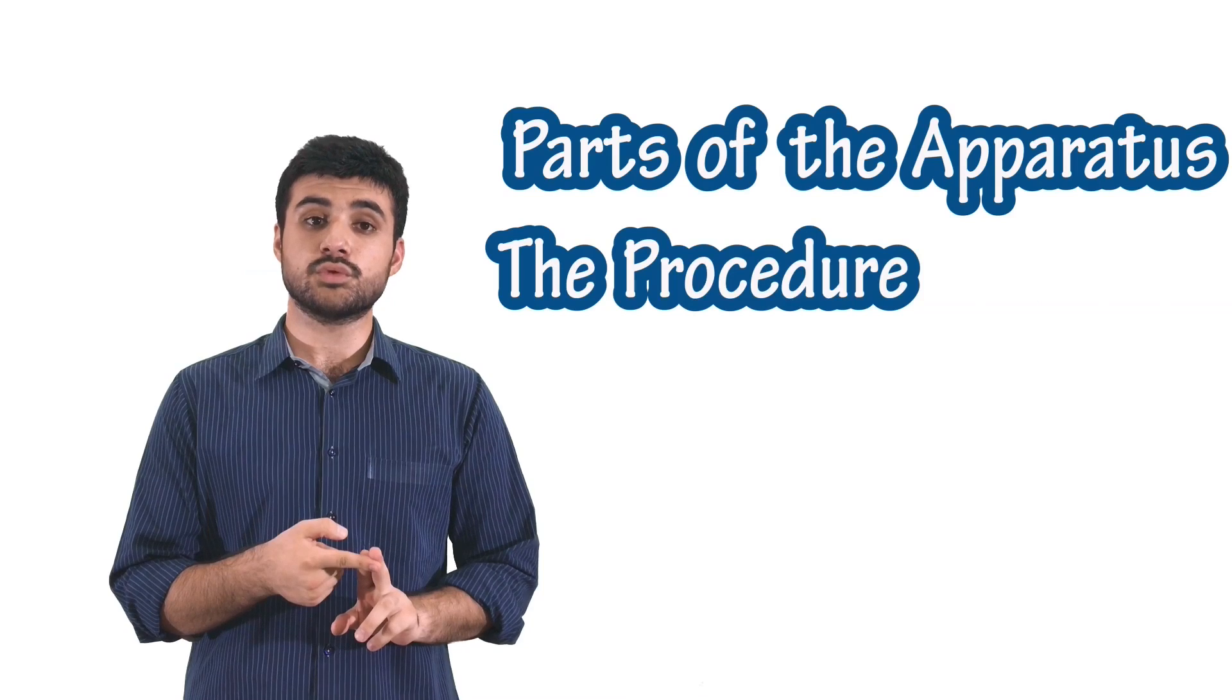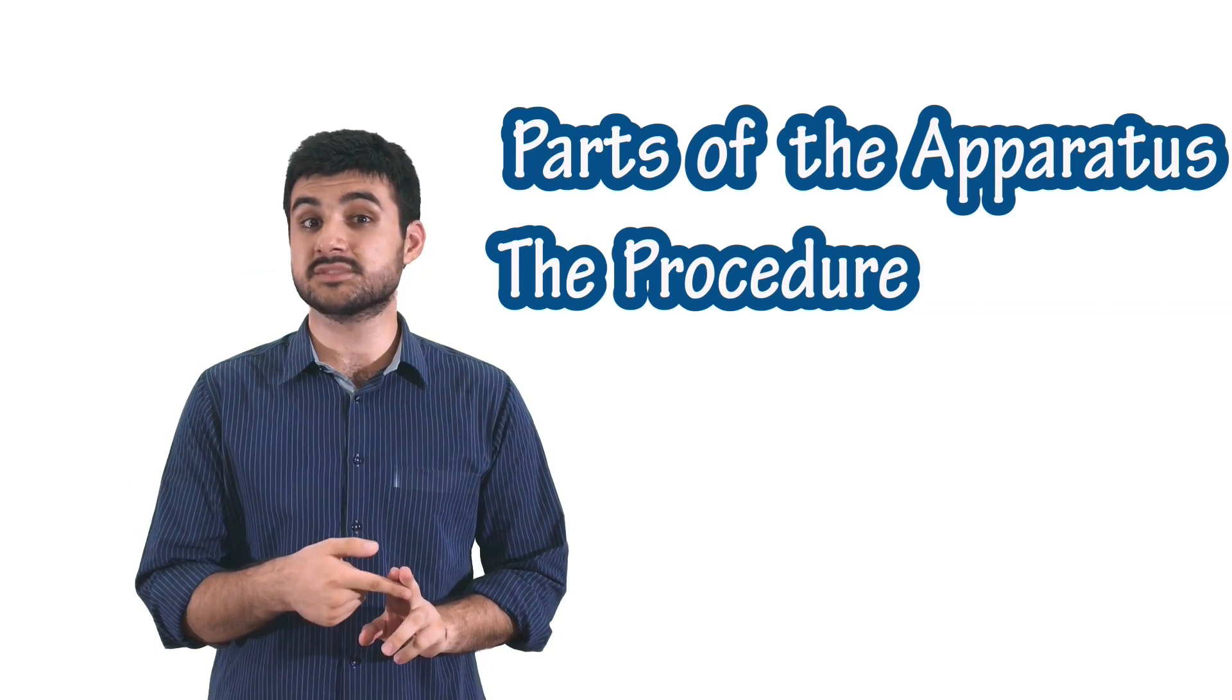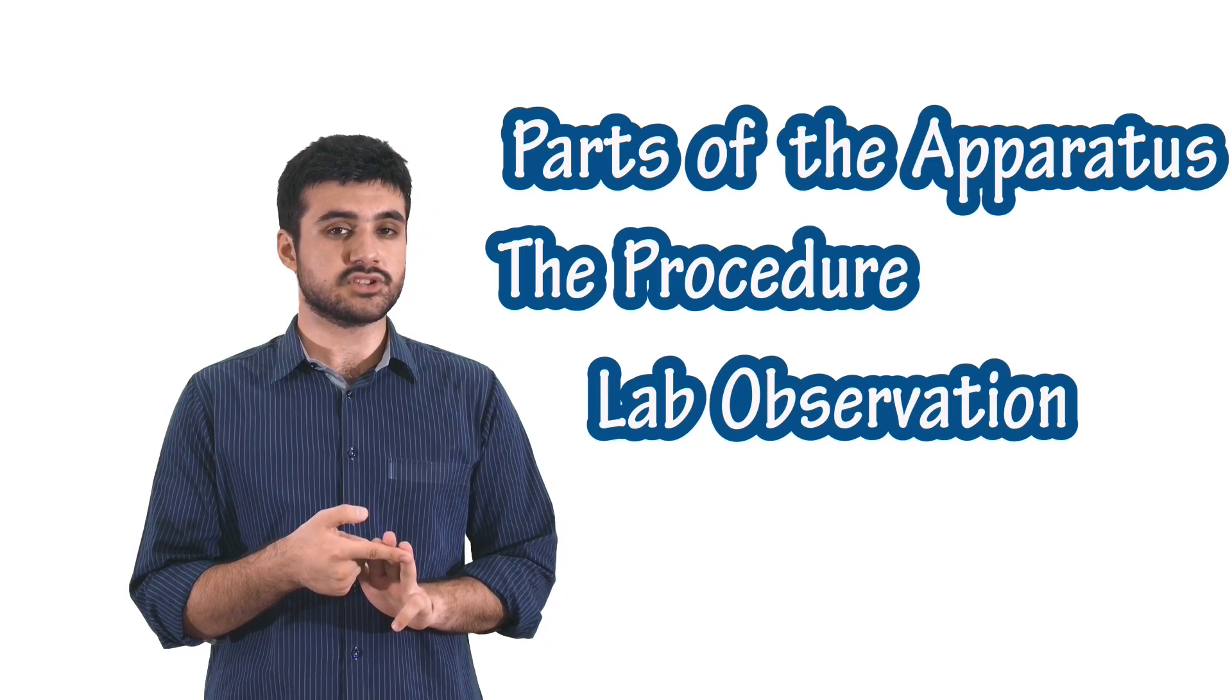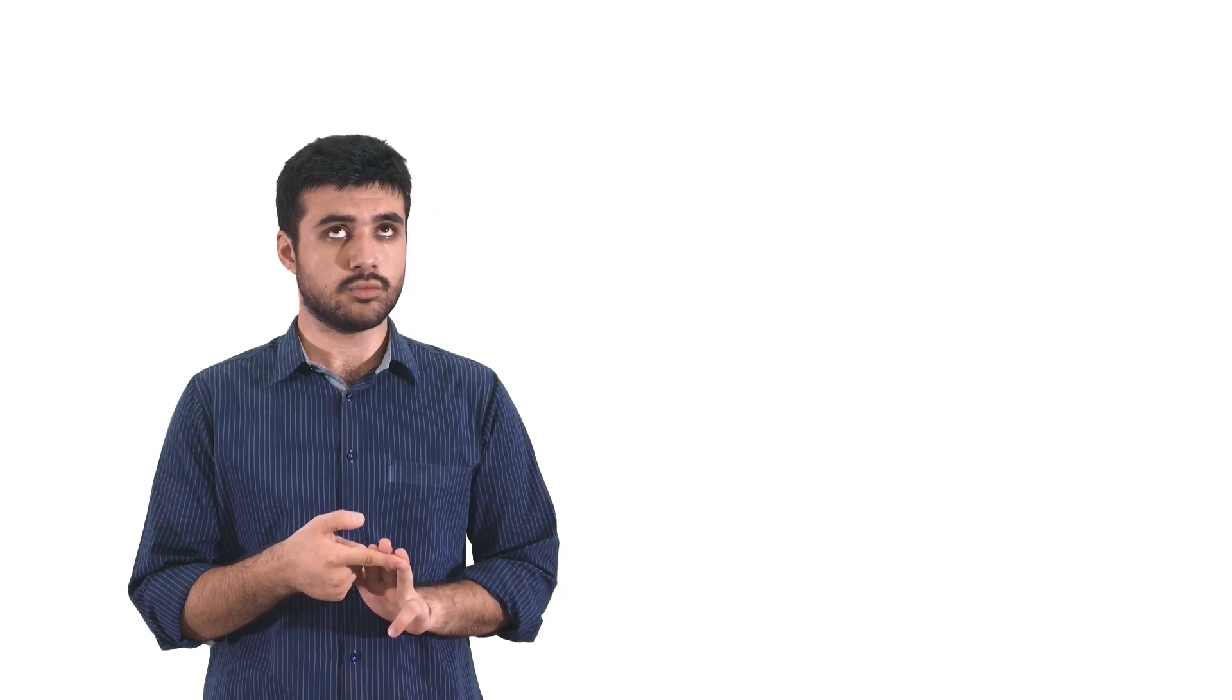And lastly, each one of these experiments is subdivided into three different parts. First, we explain and name the parts of the apparatus. Second, we explain the procedure, how the experiment has been performed. And third, we give you all the lab observations and calculations we've made. Hope that sums up all the confusion. Enjoy.